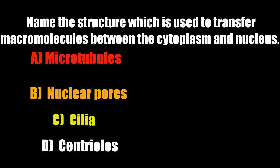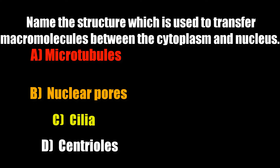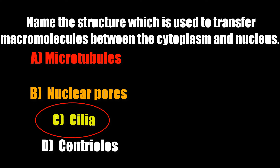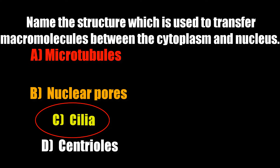Name the structure which is used to transfer macromolecules between the cytoplasm and nucleus. Options: microtubules, nuclear pores, cilia, centriole. Correct answer is cilia.